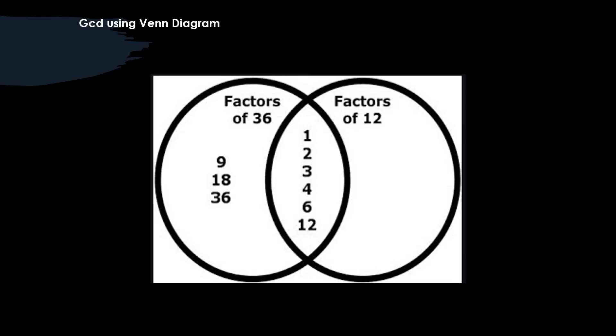We can also find the GCD using the Venn diagram. We can find the factors of 24, factors of 36, and that intersection will be the common factors of 36 and 24. In that the maximum is 12 and that will be the GCD.